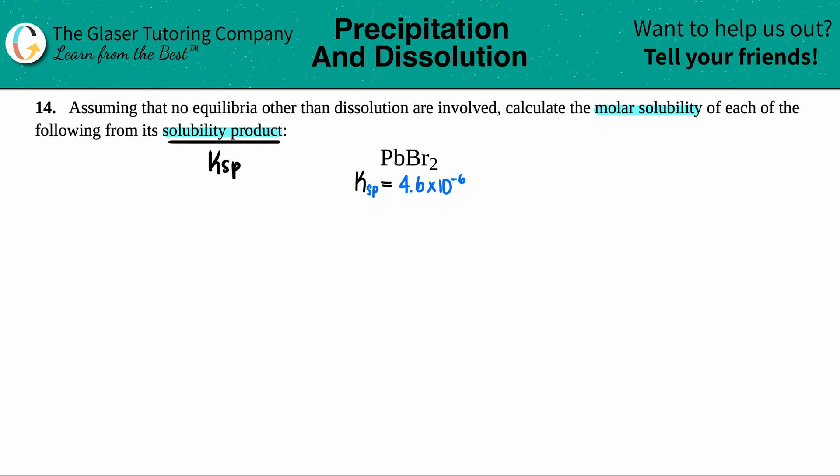But what is a Ksp value without its balanced equation? It's nothing. So we first have to write the balanced equation for lead two bromide. So let's go for it. PbBr2.